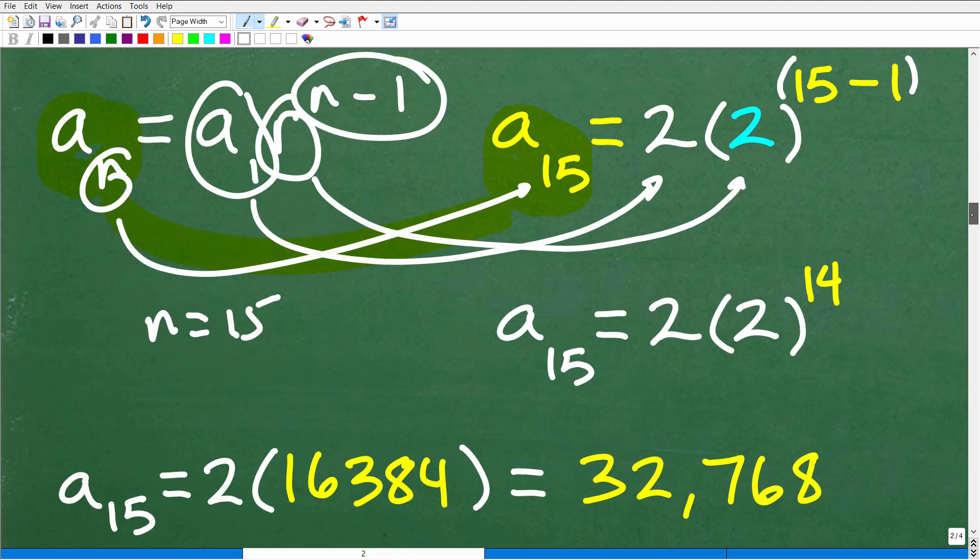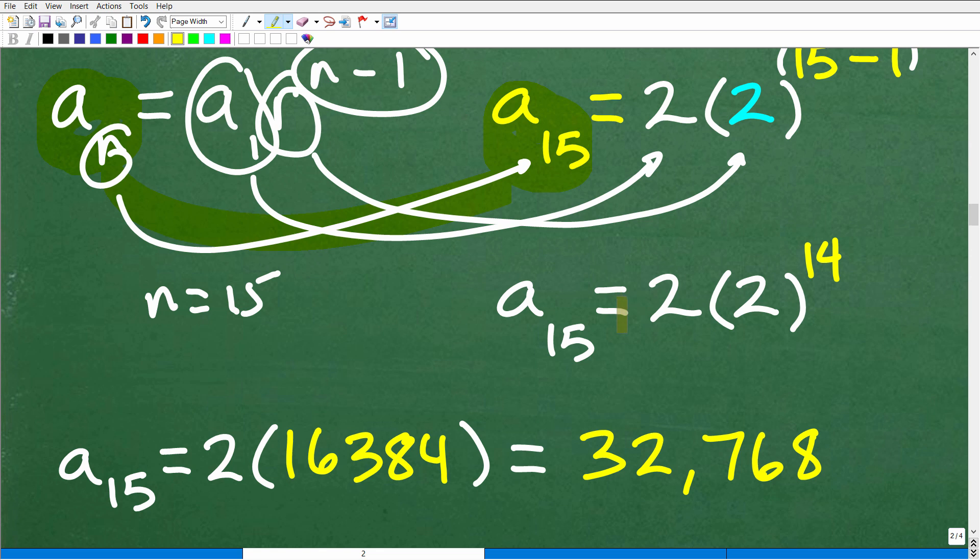You're going to need your calculator for this number crunching. This is a sub 15 equals 2 times 2 to the 15 minus 1, which would be 14. Remember order of operations, you've got to take 2 to the 14th power first. Don't multiply yet. We've got to do powers before multiplication. 2 to the 14th power, plug that into your calculator. This is 16,384. We can take that 2 here and multiply it by 16,384, which gives us our final answer: 32,768. That is the value of the 15th term of this geometric sequence.